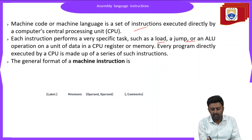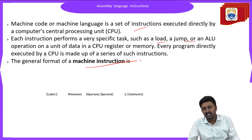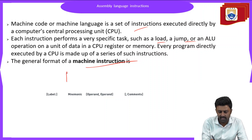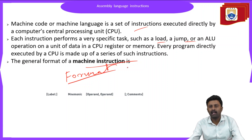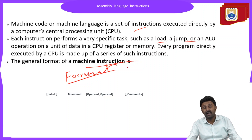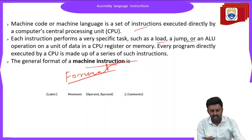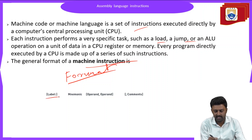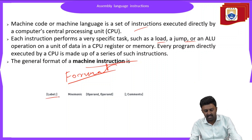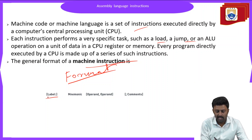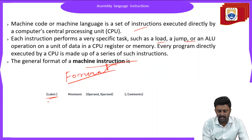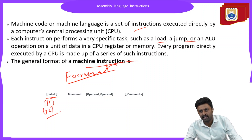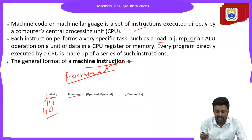The general format of an instruction in machine level language or assembly language consists of several parts. The first part of an instruction is the label. The label is used for giving names — you can give any name such as P1, P2, or anything. The label is simply for naming purposes.